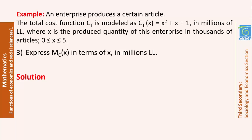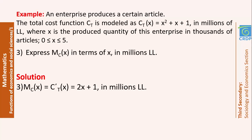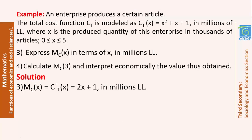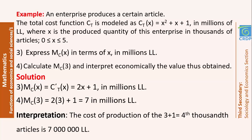In number 3, express the marginal cost mc(x) in terms of x. Since the quantity produced is in thousands of articles, which is large enough, we use the derivative: mc(x) = Ct′(x) = 2x + 1 in million Lebanese lira. In number 4, calculate the marginal cost when x equals 3: replacing x by 3 gives 7 million Lebanese lira. This means that when 3 units are already produced, the cost of production of the 4th unit — which is 4,000 articles — is 7 million Lebanese lira.